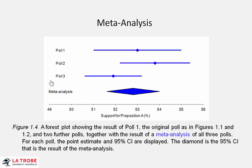Do we prefer short confidence intervals or long? Pause the video for a tick and just think about that for a moment. Well, you probably figured out that we much prefer short, because short means smaller margin of error. Long means a larger margin of error, more uncertainty. A long confidence interval means our estimate is not so precise. Short is better.